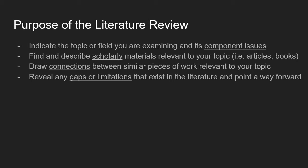What exactly does a literature review accomplish? First, a literature review indicates the topic or field that you're examining and its component issues. You can think about a literature review as representing the different aspects of a topic. In a literature review, you find and describe the scholarly materials relevant to your topic — information from academic journal articles or books — and you draw connections between similar pieces of work relevant to your topic.